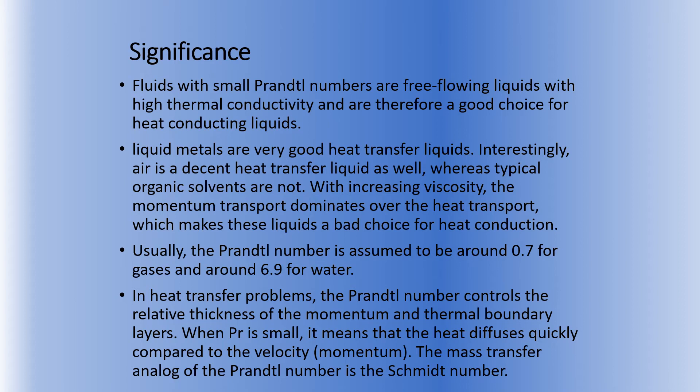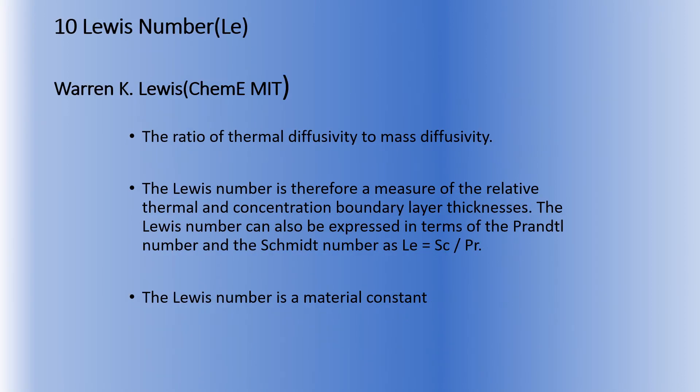For Prandtl number values: for gases it is usually 0.7, while for water it is equal to 6.9. In heat transfer problems, the Prandtl number controls the relative thickness of the momentum and thermal boundary layers. When the Prandtl number is small, heat diffuses quickly compared to velocity, so there will be more heat transfer taking place than momentum transfer. The analog of the Prandtl number in mass transfer is the Schmidt number.